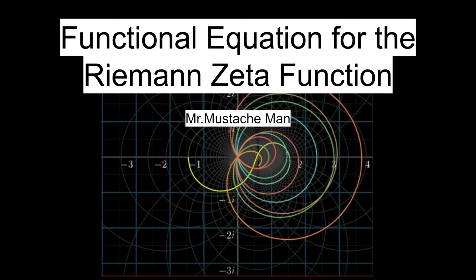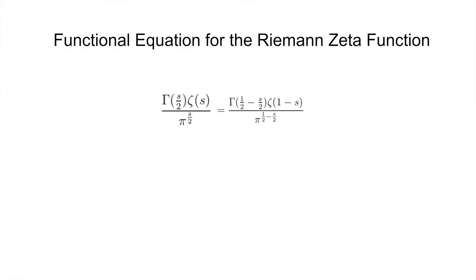Hi guys. In this video I'll prove the functional equation for the Riemann zeta function, which says that gamma of s over 2 times zeta of s over 2 is equal to gamma of 1 half minus s over 2 times zeta of pi to the power of 1 half minus s over 2. I will also be explaining why it's so important and its many uses. So let's get started.